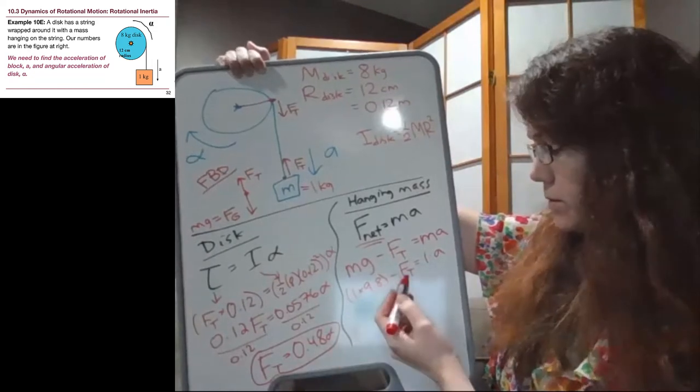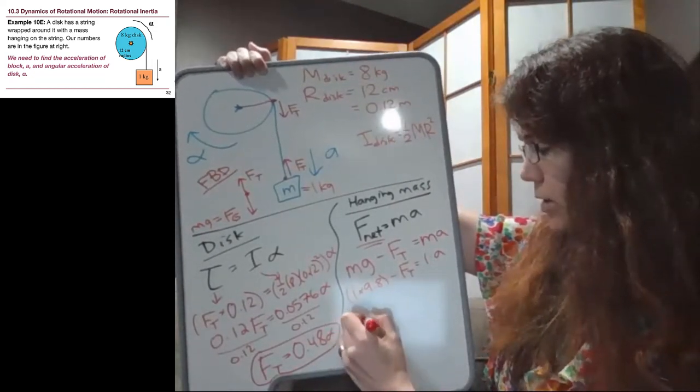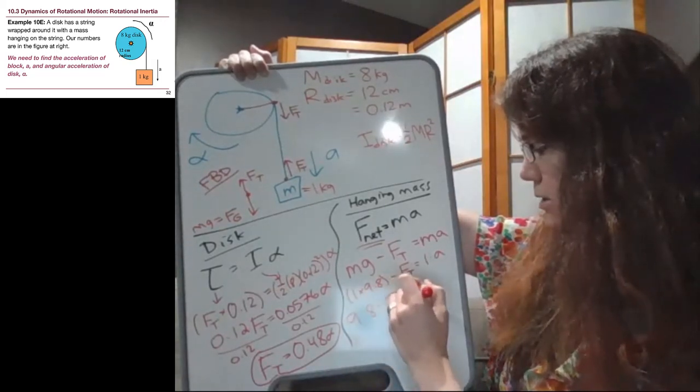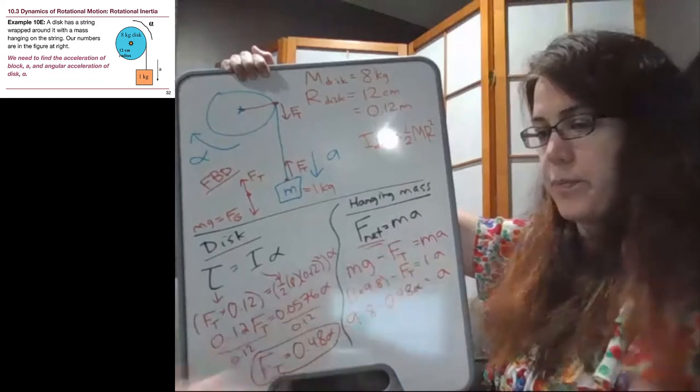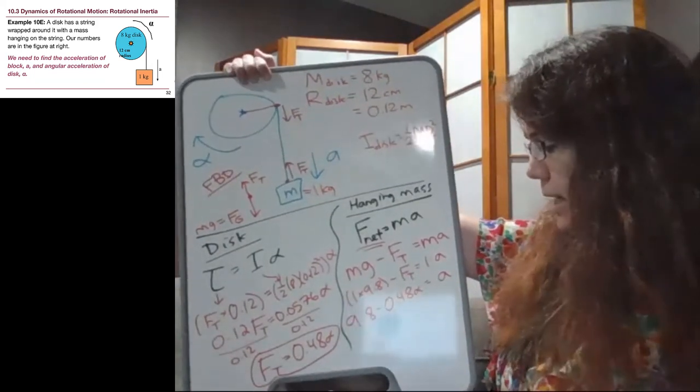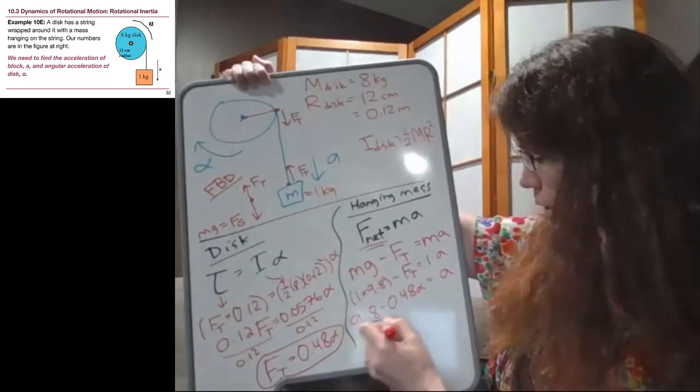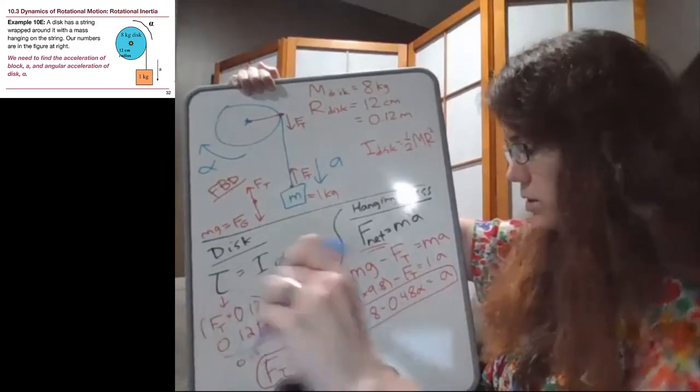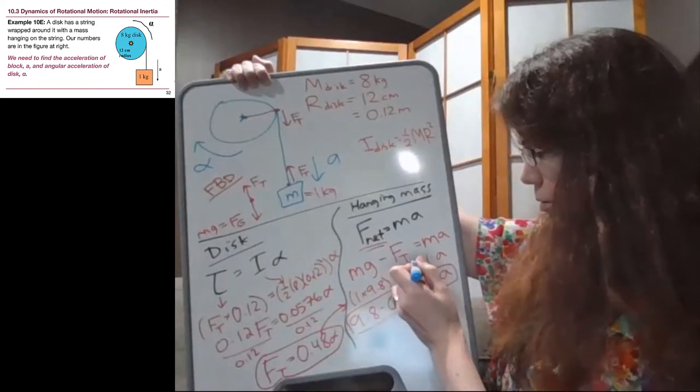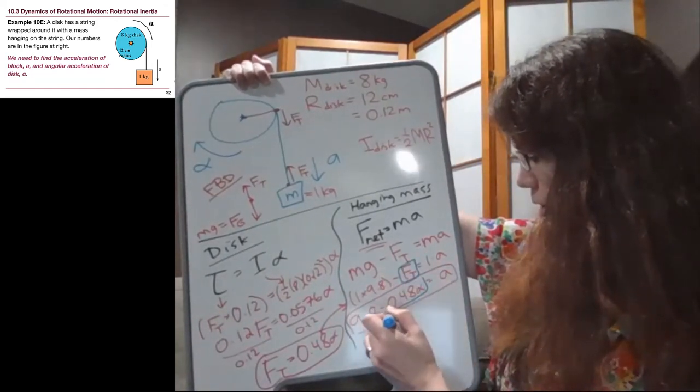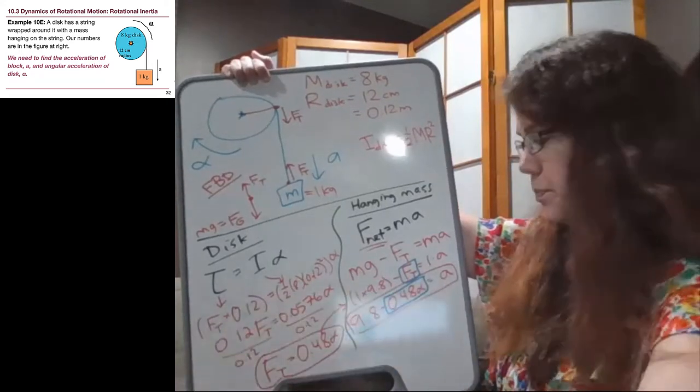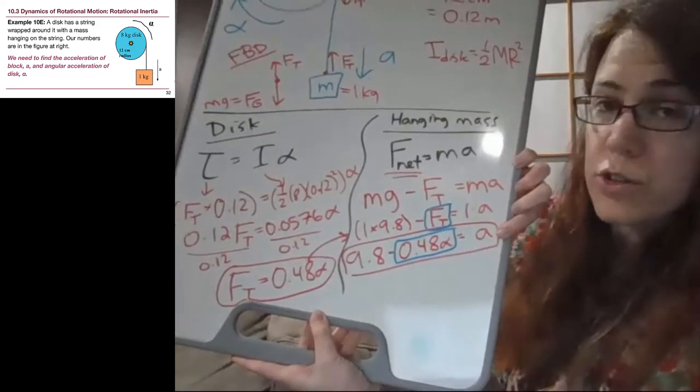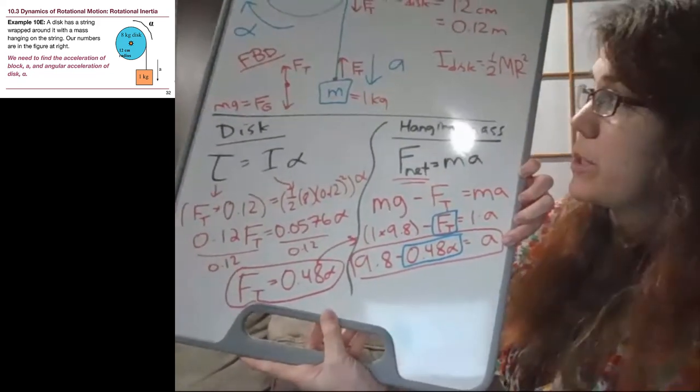All right, we can plug in the tension here, our unknown. So now we have 9.8 minus 0.48 alpha equals A, because one times A is just A. So now we have this equation here. We've already used this one, we've already done our substitution the first time through. Instead of tension, we have 0.48 alpha. But if we look at this equation now that we still have, there's two unknowns, alpha and A, that are different from each other.